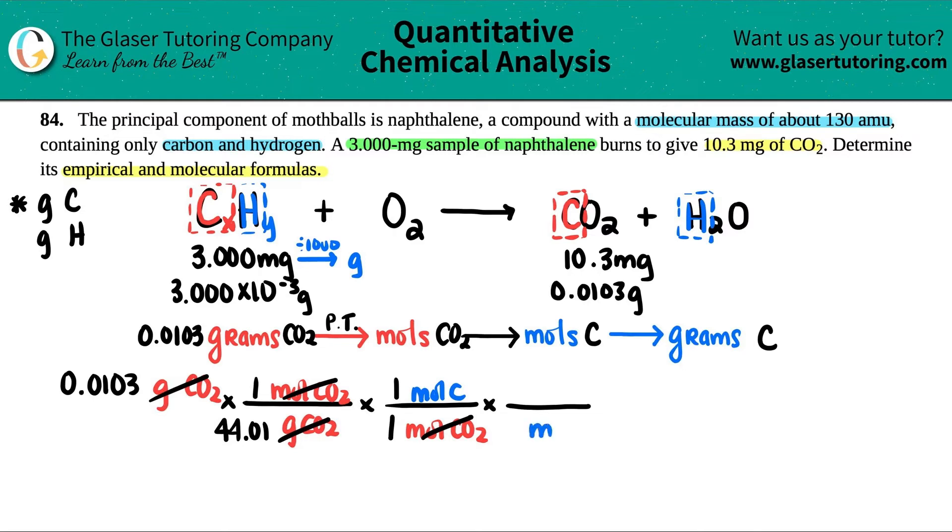And then that cancels out. But now we just got to go to grams of carbon. So mole of C on the bottom, gram of C up top. This is going back to the periodic table. One mole of carbon equals 12.01 grams. And now I can just find out how many grams of carbon. 0.0103 divided by 44.01 times 12.01. I get 0.00281 grams of C. So we found out how many grams of carbon I have. In this whole compound, the grams of carbon is specifically 0.00281 grams.